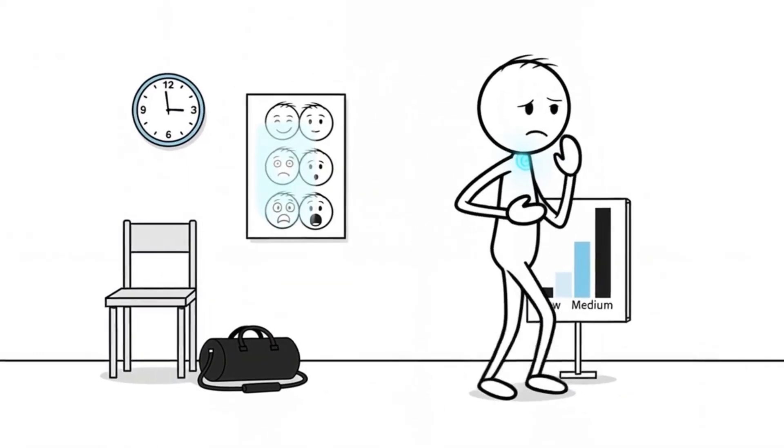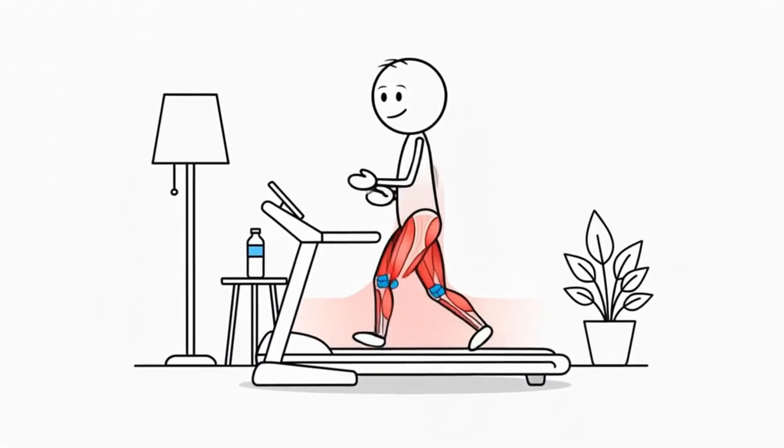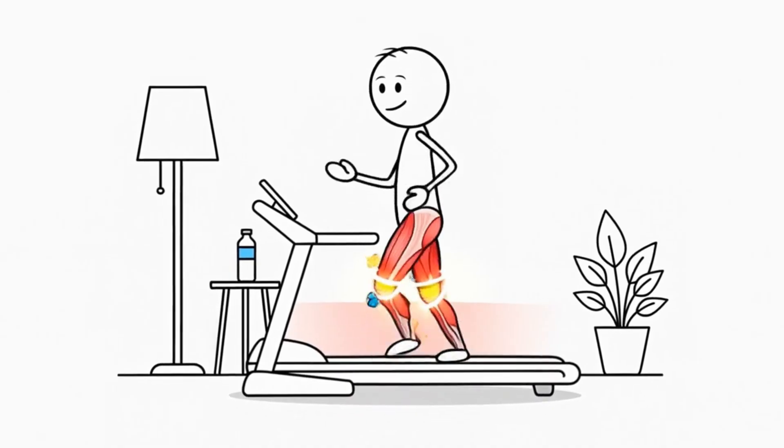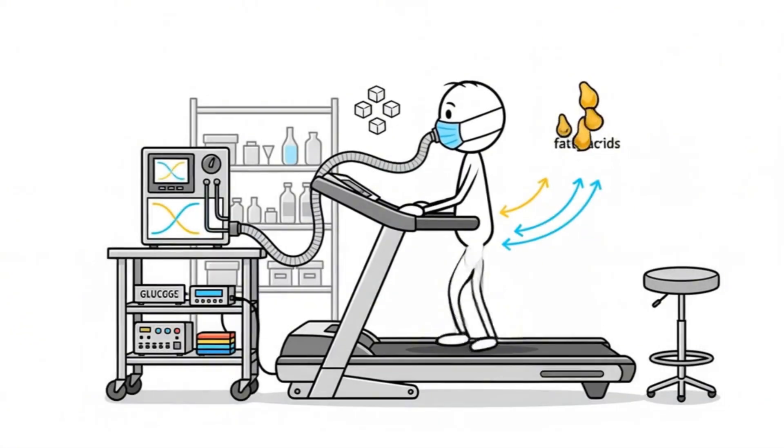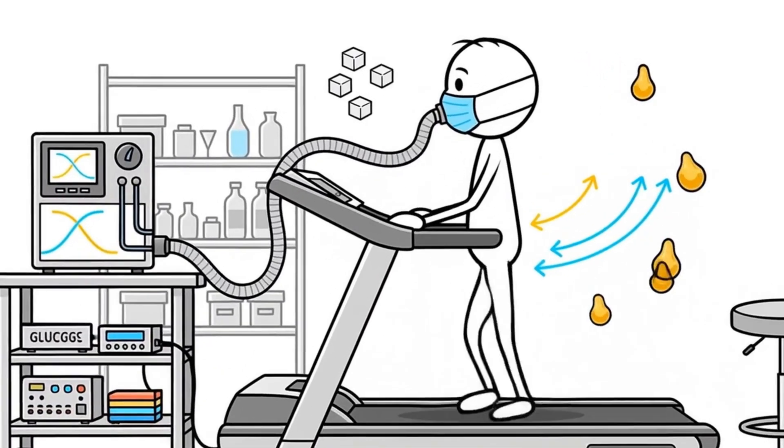Later in this video, I'll show you how to know you're in the correct zone, even without a smartwatch. Inside your muscles, there's a quiet shift that happens the moment you enter Zone 2. Instead of relying heavily on glucose, your body begins pulling energy from fatty acids.